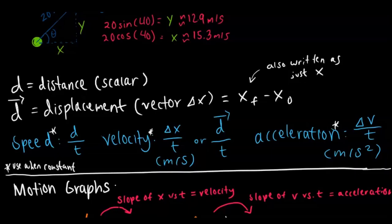Speed is distance over time. Velocity is change in position over time or displacement over time. Acceleration is just how fast your velocity is changing over time. There are the different units, which are represented as meters per second for velocity and meters per second squared for acceleration.